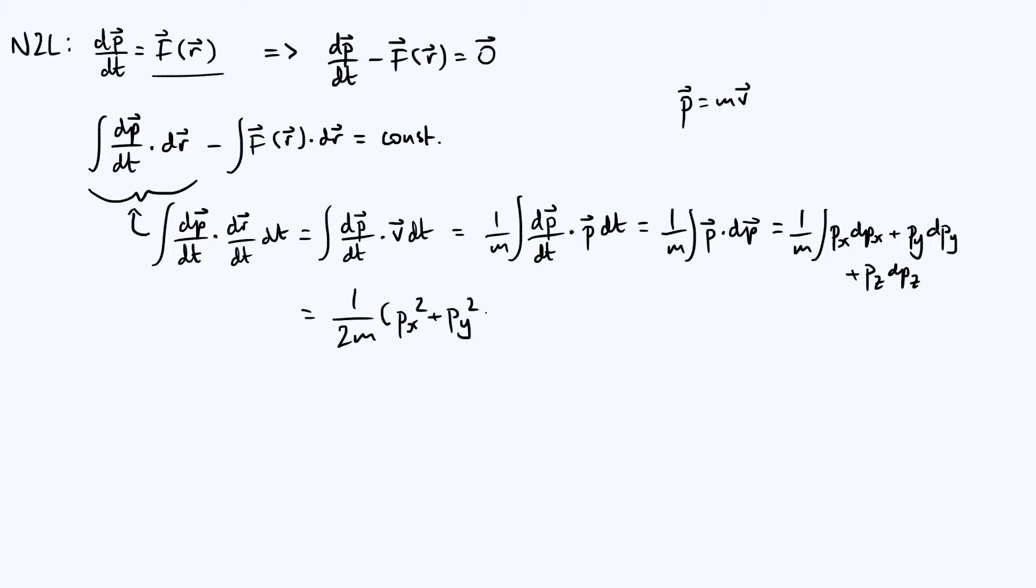Now I don't have a constant of integration here, like you don't have to do a plus c or anything, because I already have that on the other side of my equation up at the top there. Now if you think about it, this bracketed term is just the magnitude of the momentum squared.